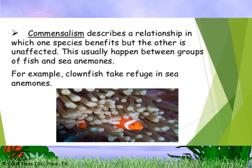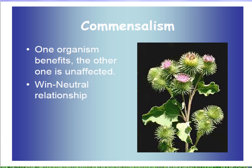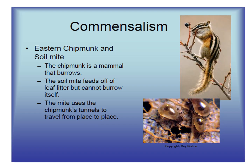Commensalism is a type of relationship in which one species benefits but the other is unaffected. For example, the clownfish and sea anemones — the clownfish benefits by hiding, while the sea anemone is not affected or harmed. Another example is the eastern chipmunk and the soil mite.